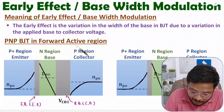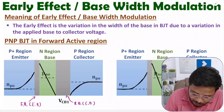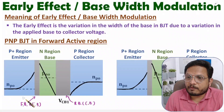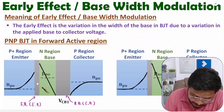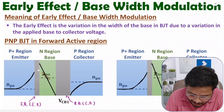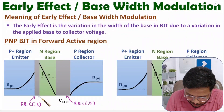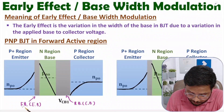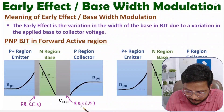With this biasing the PNP BJT is in the forward active region. At the emitter-base junction, which is forward biased, the depletion region width is small — shown in light black. At the collector-base junction, which is reverse biased, the depletion region width is larger.